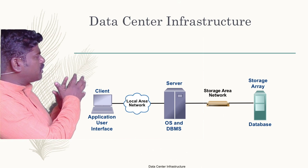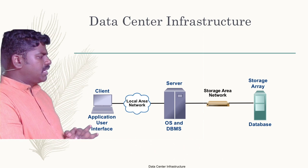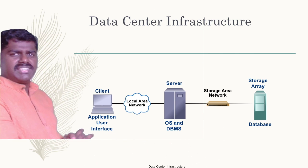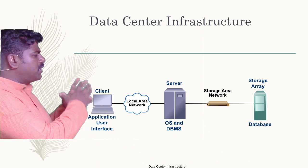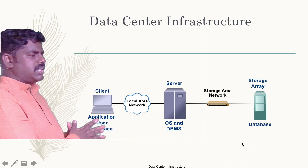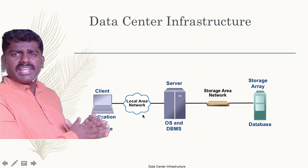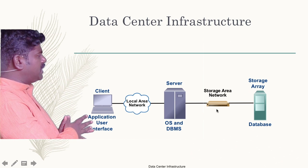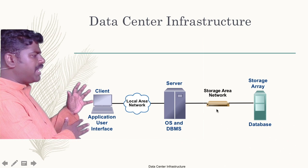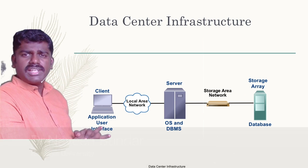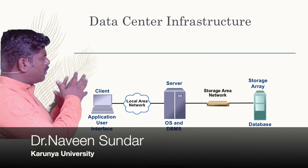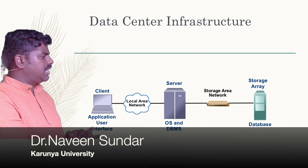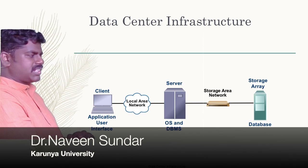Here you can see what are the five core elements. Initially you have the application user interface, and then we have the server. And then we have the storage array, and how we are going to use the network devices — one is the LAN and another one is the storage area network. So these are the five core elements in the data center infrastructure.